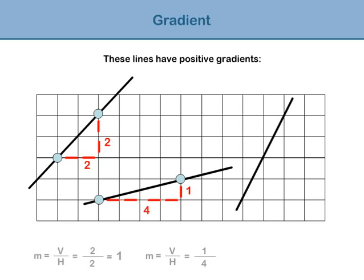Let's take a look at one final example. Plot the points and draw a right-angled triangle. V equals 4 and H equals 2. M equals V divided by H, so M equals 4 divided by 2. Therefore, our gradient M equals 2.